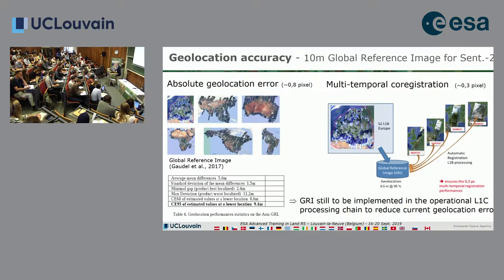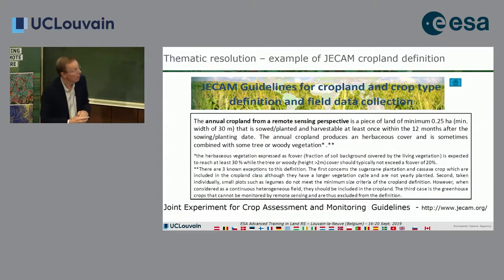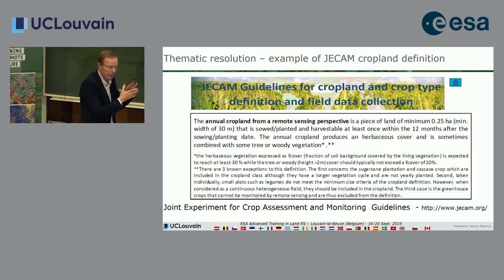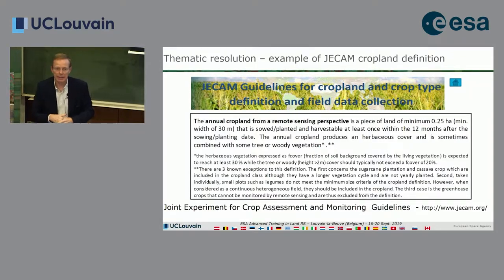If you want to do a better job, you can still geolocate your image again, geometrically correct it with your own GCPs, and do image matching to further correct remaining errors from level 1C quality. Geolocation error is one component of uncertainty. Another component is thematic resolution.